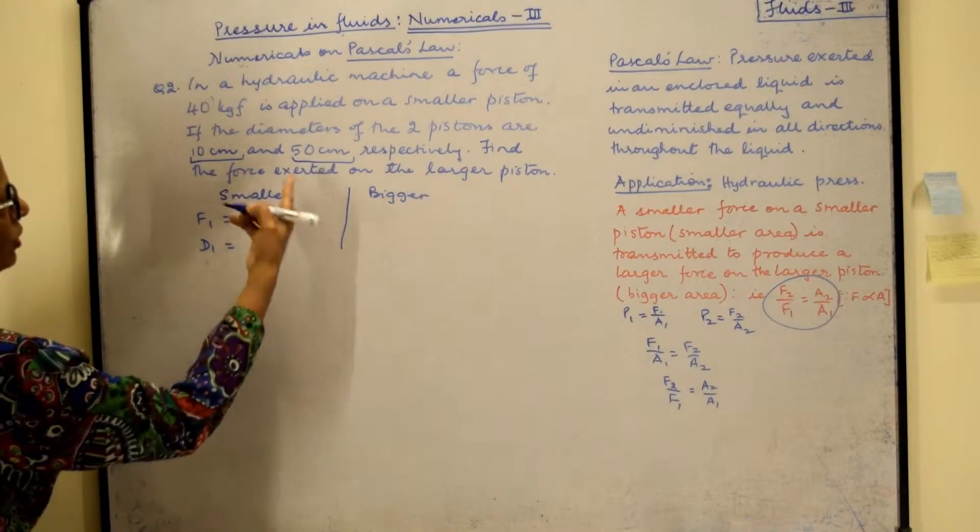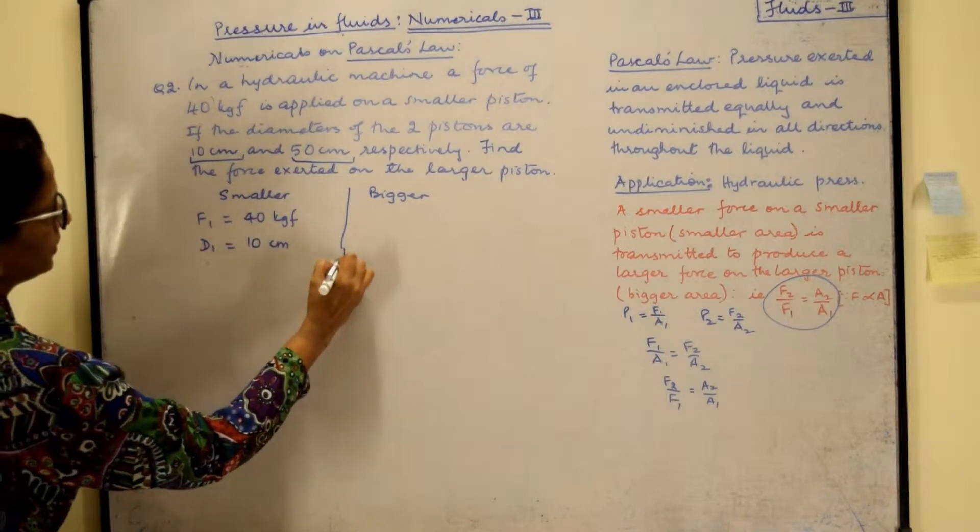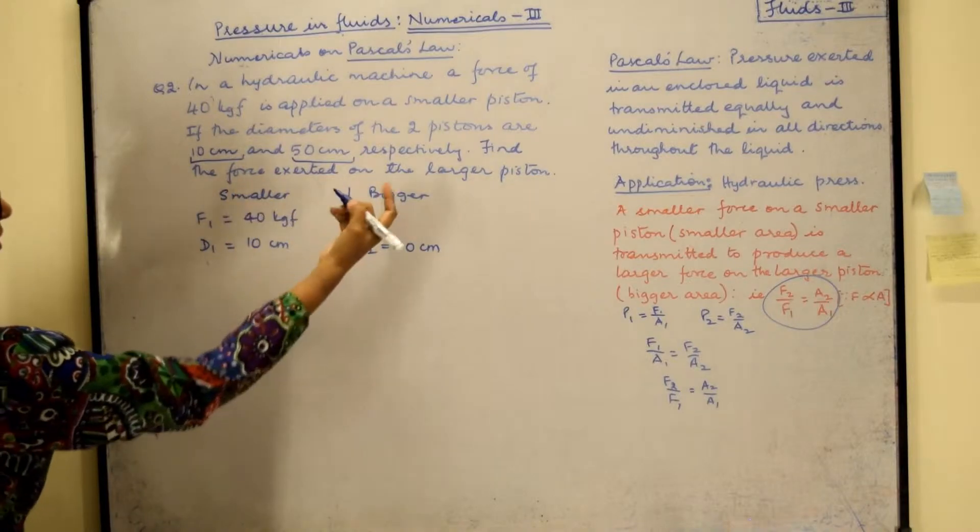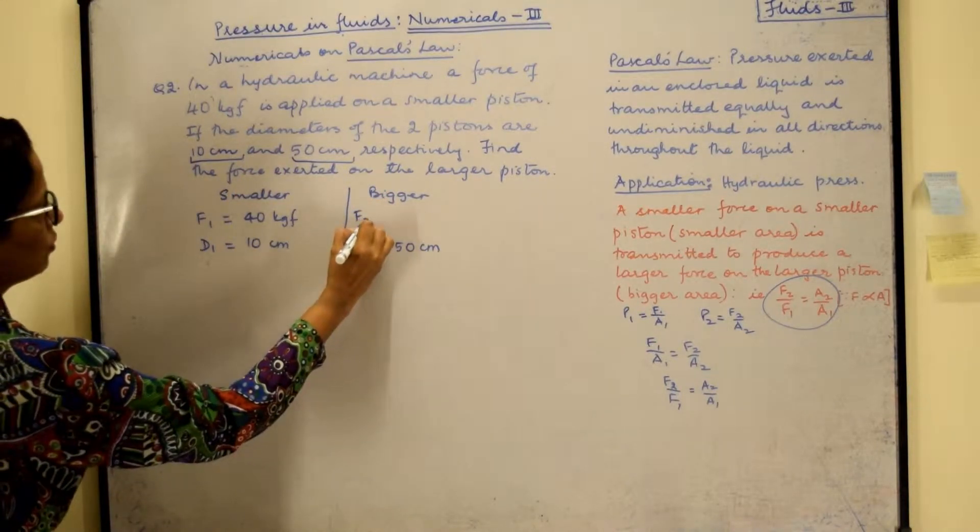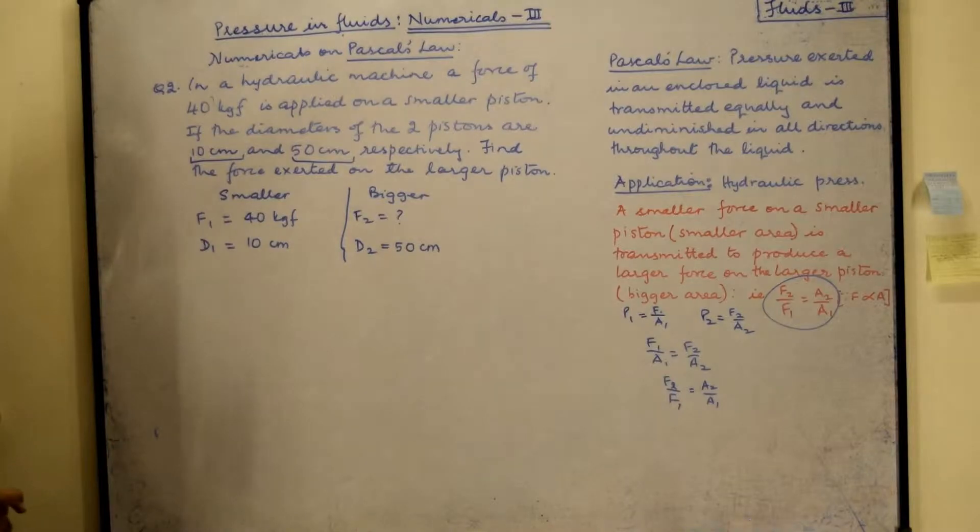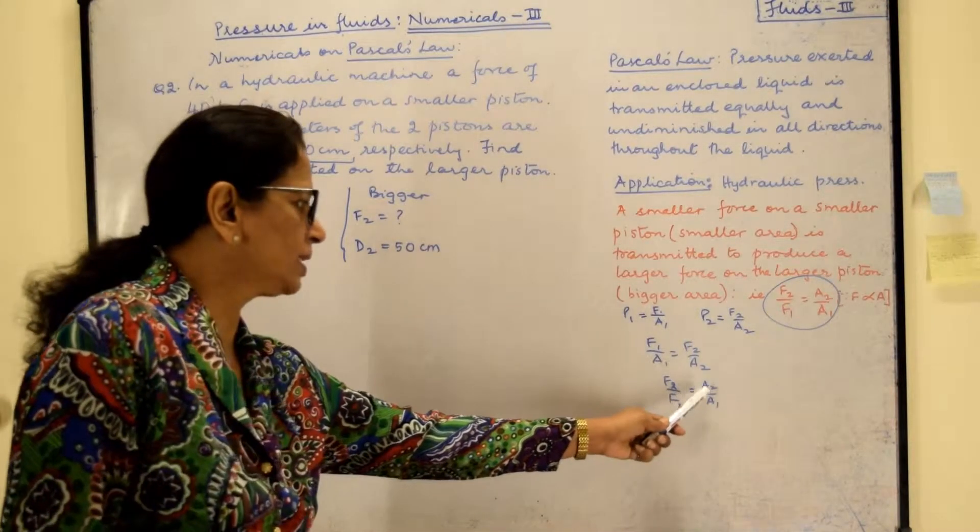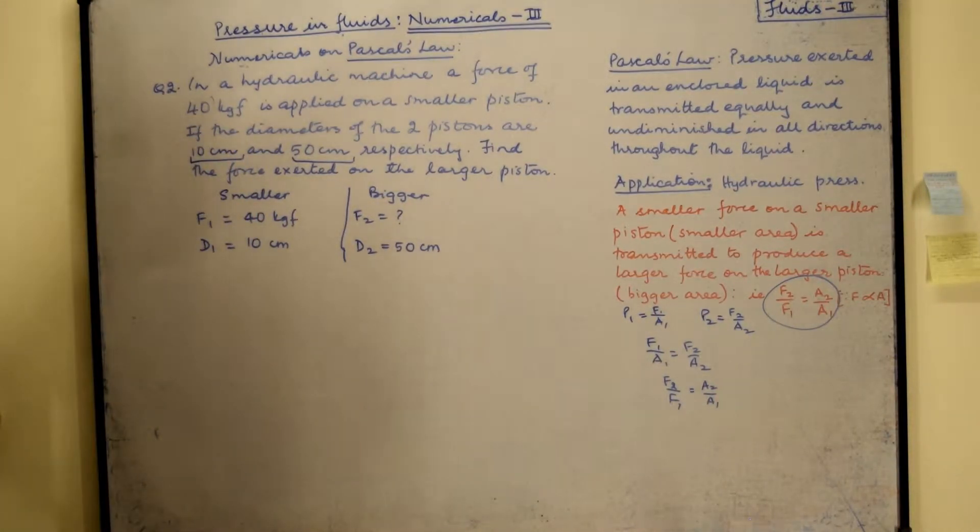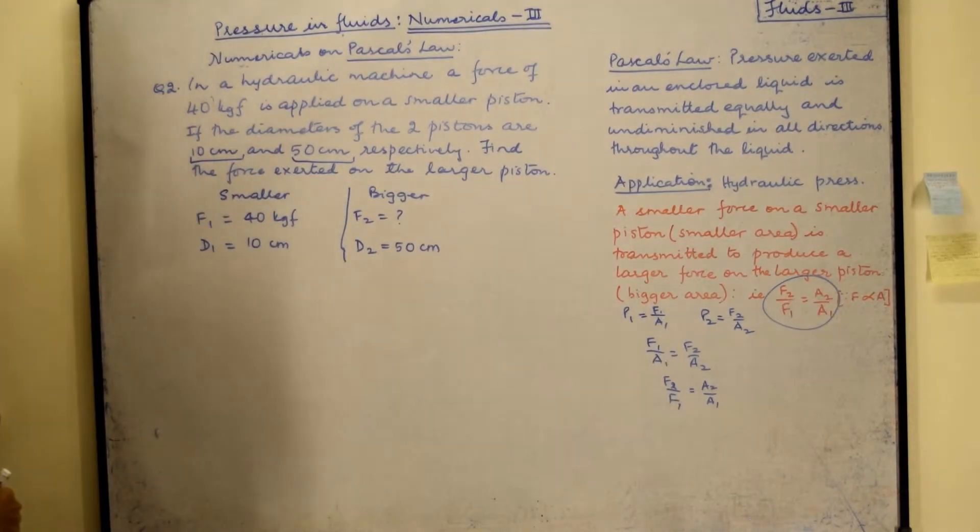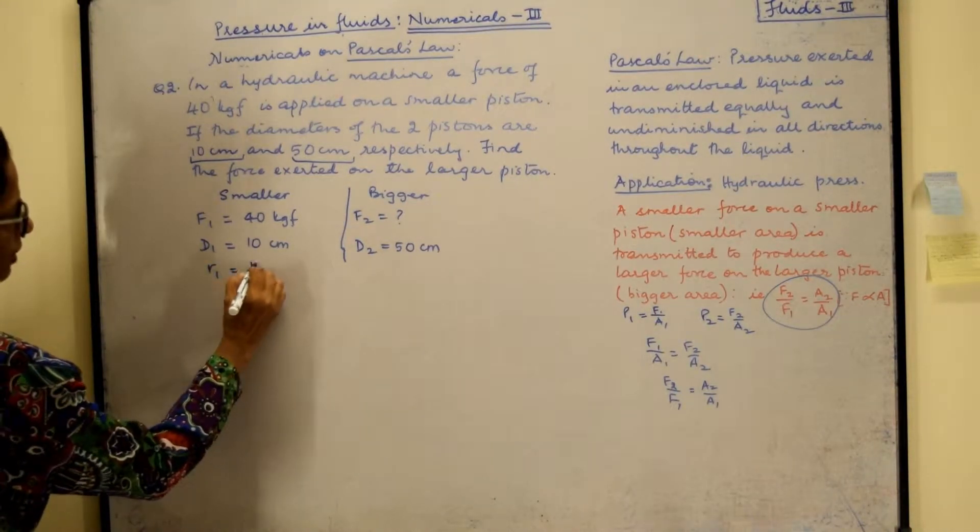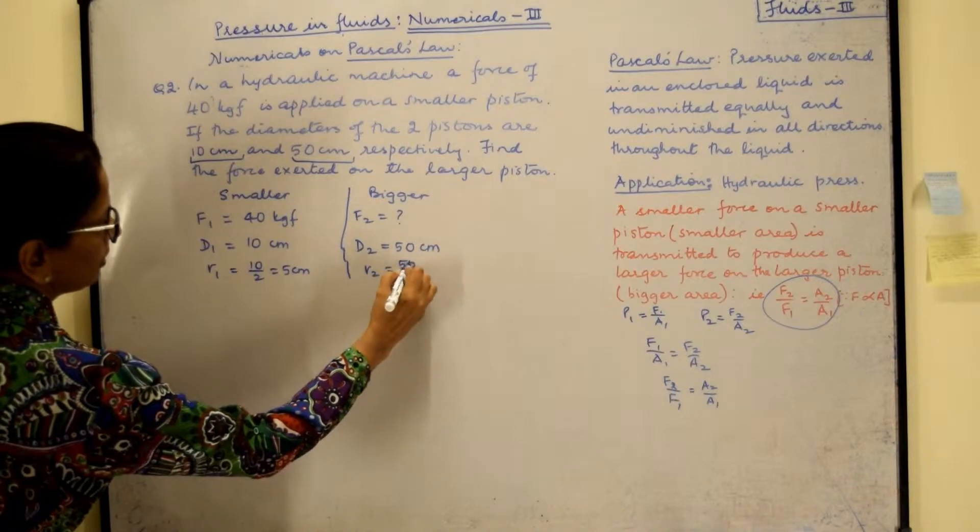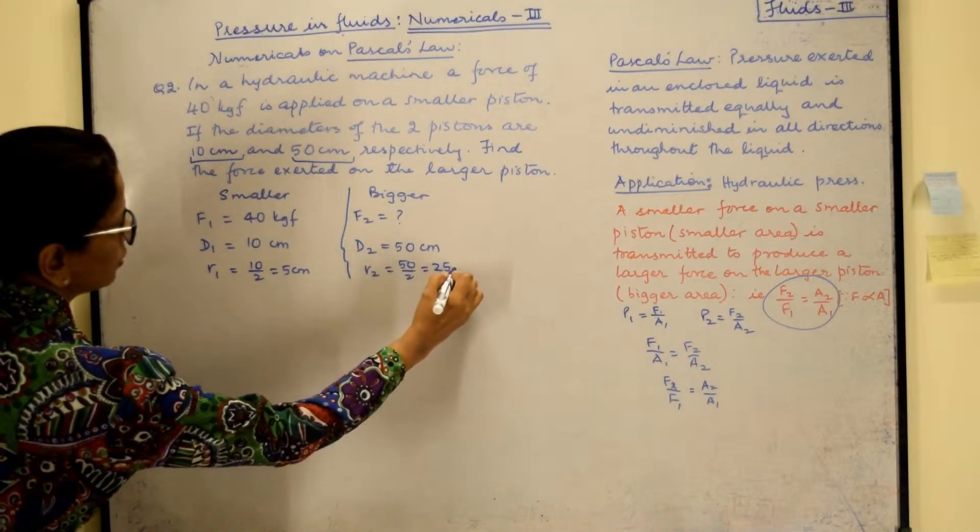And the diameters are given. So I will call this as D1. For the smaller one it is 10 centimeter. For bigger it is D2 which will be 50 centimeter. And we have to find the force exerted on the larger piston which means F2 is to be found out. Now we have been given diameters. What does our formula say? Our formula we have already written. F2 upon F1 is A2 upon A1. So we need area of cross section. Now knowing that these diameters are given that makes the two pistons circular in surface which means we need to find their radius. So R1 will be 10 upon 2 which means 5 centimeter. And here you will have to find R2 which will be 50 upon 2 which will give us 25 centimeter.